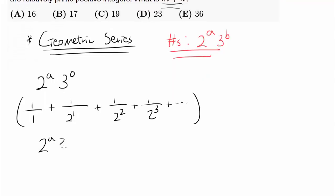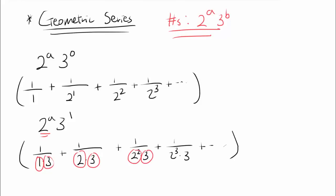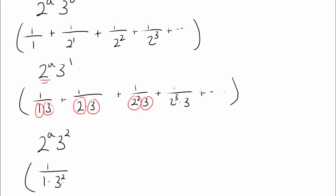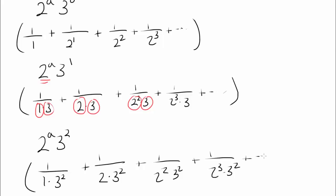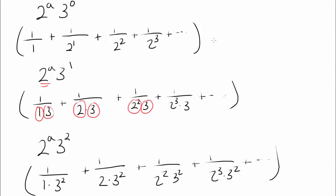When we include one factor of 3, we get 1 over 3 plus 1 over (2 times 3) plus 1 over (2 squared times 3) plus 1 over (2 cubed times 3), and so on. For 3 squared, each term is divided by 9. This power of 3 goes from 0 to 1 to 2, all the way to infinity, so we are adding up infinitely many geometric series.